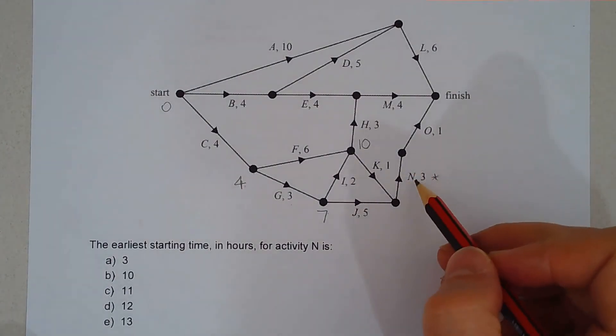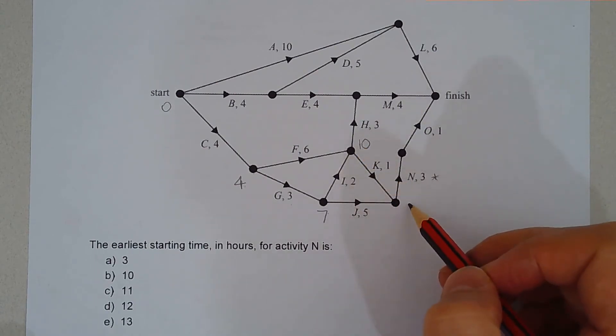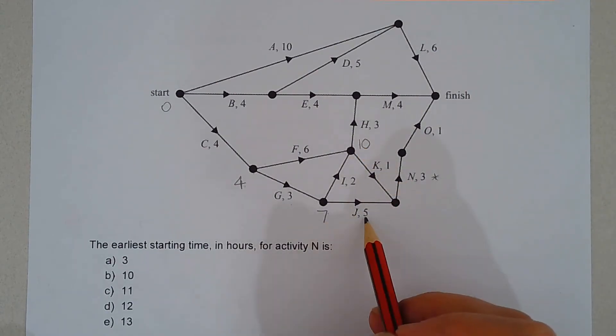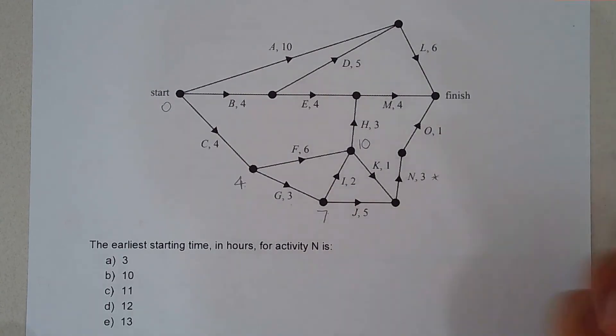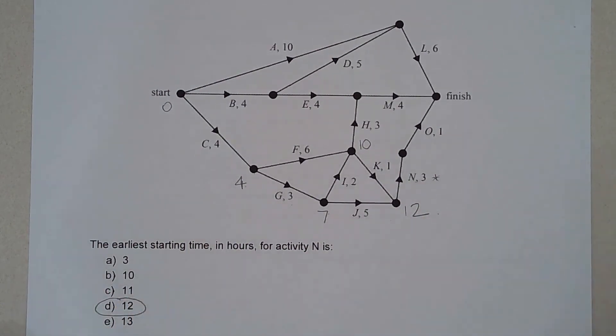Now to get to vertex N we can either go through K, so ten plus one is eleven, or seven plus five is twelve, so again we put the higher of the two numbers. So the earliest starting time for activity N is at the twelve hour mark, option D.